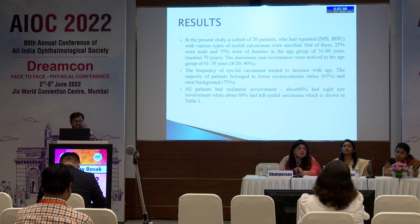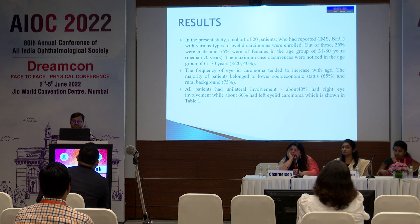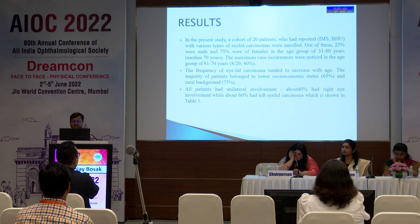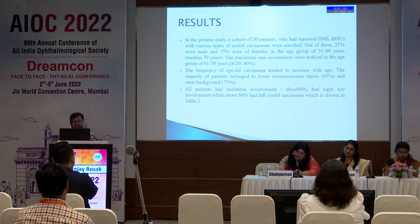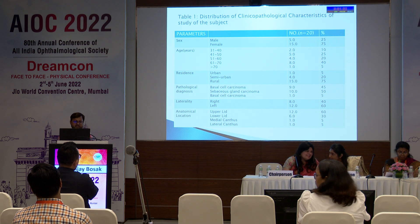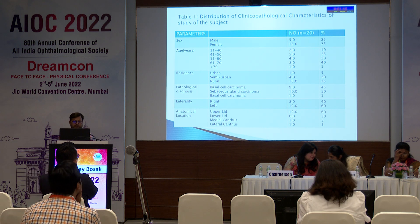In the present study, a cohort of 20 patients with various types of eyelid carcinoma were enrolled. 25% were male and 75% were female, in the age group 31 to 80 years. Maximum case occurrences were noted in the age group of 61 to 70. The frequency of eyelid carcinoma tended to increase with age. The majority of patients belonged to lower socio-economic status and rural background. All patients had unilateral involvement; 40% had right eye involvement while 60% had left eye involvement.